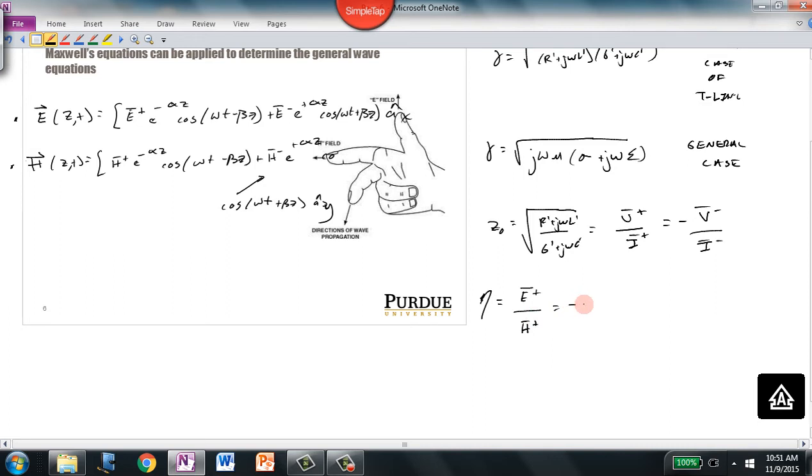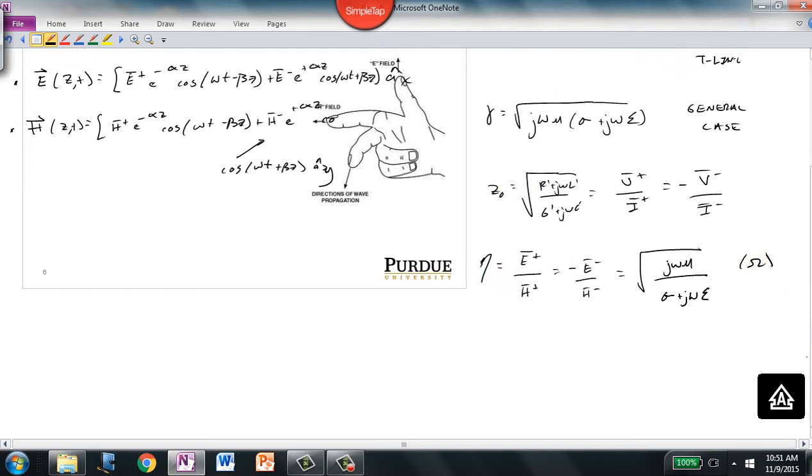That's also equal to minus E bar minus over H bar minus. And that, not too surprisingly, is going to be equal to j omega mu divided by sigma plus j omega epsilon. It's also measured in ohms, just like characteristic impedance was. This new quantity is called the intrinsic impedance.